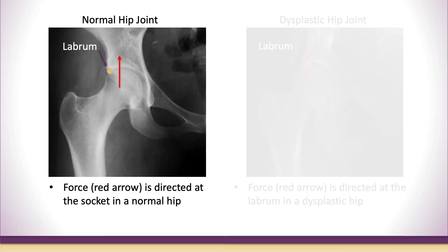These slides show why the labrum gets damaged and why people have pain when they have dysplasia. On the left, this x-ray shows a normal hip joint where the socket is over the ball. That red arrow shows the force going through your feet and up through your legs into your body. In a normal hip, the force goes through the center of the cup, where good articular cartilage is able to absorb that force and pressure.